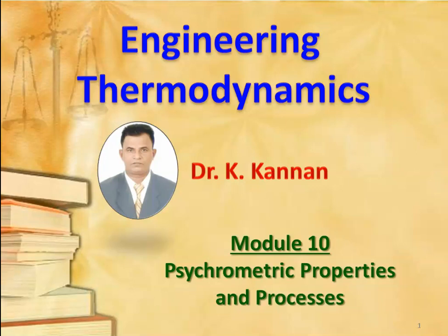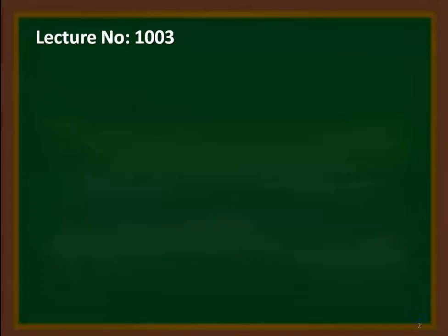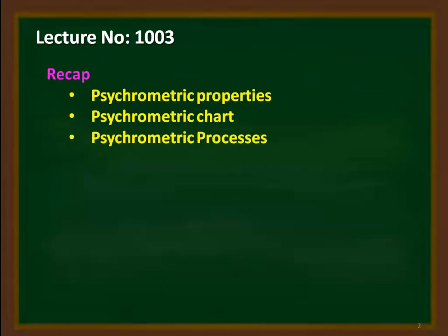We are discussing the topic of psychrometric properties and psychrometric processes. This is the third lecture on Module 10, and we recap from the previous two lectures. In the previous two lectures, we studied about psychrometric properties, discussed the psychrometric chart, and the various properties available in it. In lecture number two, we studied about psychrometric processes.